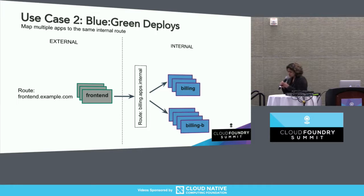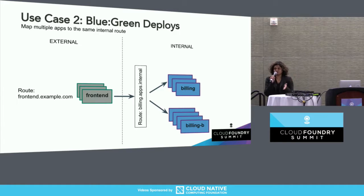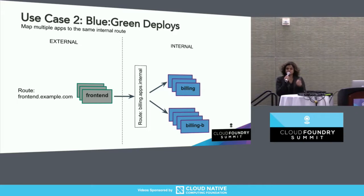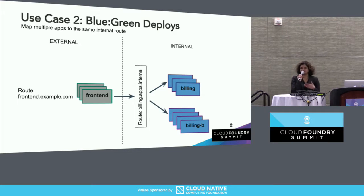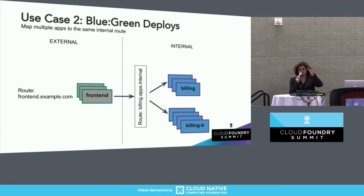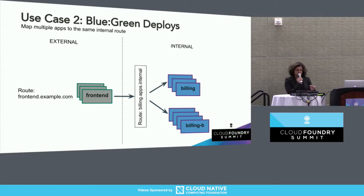The second use case: similar to how developers are used to the current map route command, which can map multiple applications to the same route, we also wanted to provide that same experience for internal routes. You can map a new version of your app to the same route, validate that it works, and then take the old app out of commission. This is a very typical workflow for blue-green deploys on the platform today.